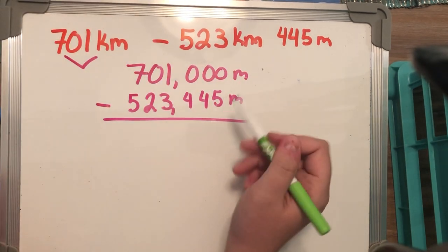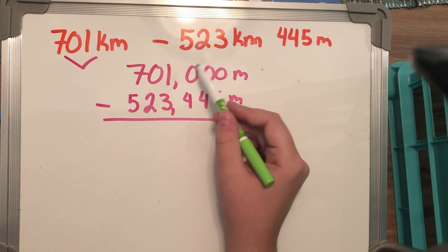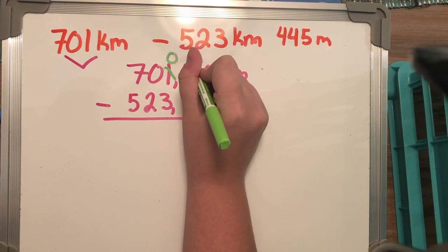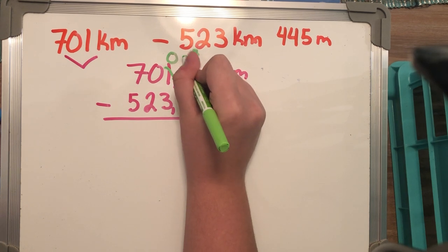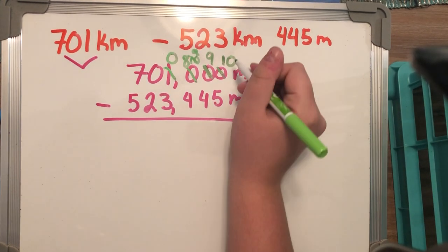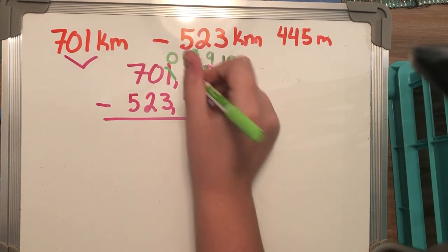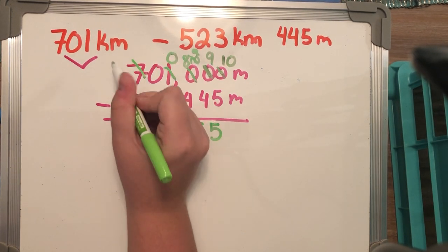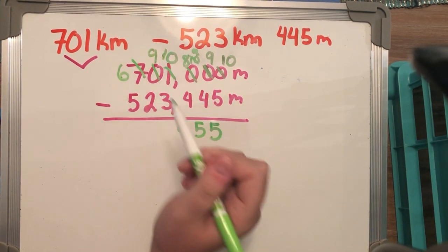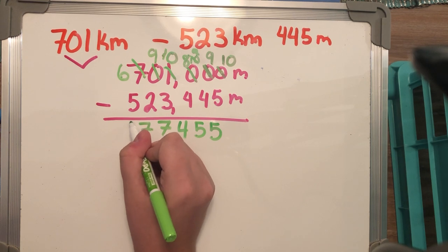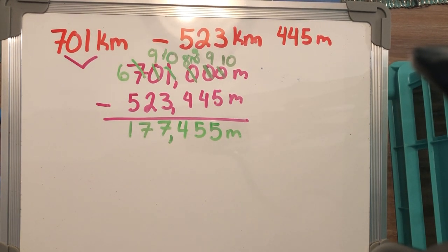Now I can go ahead and solve. Can't take zero away from five, so go next door. Can't take anything there either, so keep going until you can borrow. This one becomes a zero, and this becomes a 10, which becomes a 9, which really becomes an 8 because this zero becomes a 9 — it had to give back to make this one a 10. So 10 minus 5 is 5, 9 minus 4 is 5, 8 minus 4 is 4. Can't take zero away from three, so the 7 becomes a 6, this becomes a 9, giving another 10. 10 minus 3 is 7, 9 minus 2 is 7, 6 minus 5 is 1. I get 177,455 meters.